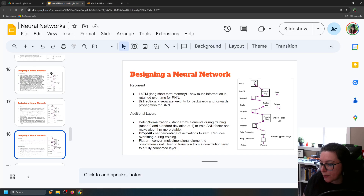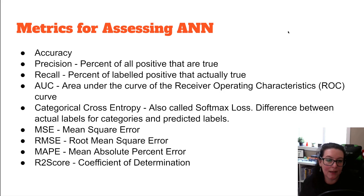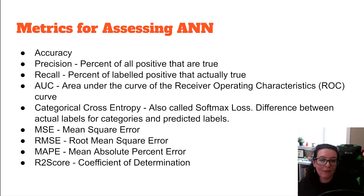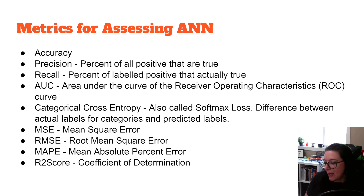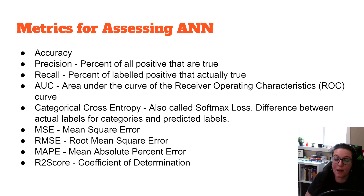When it comes to metrics: for binary classification we look at accuracy, precision, recall, and area under the curve. For multi-label classification we have accuracy and categorical cross entropy. For interval-ratio data, we can use mean square error, root mean square error, mean absolute percent error, or the coefficient of determination — R-squared. We're going to have the model use mean square error as the loss function, and also report the coefficient of determination.